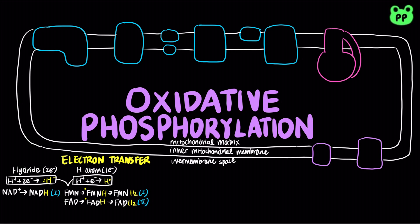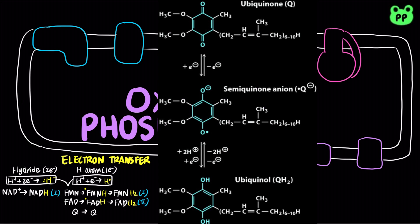Another electron carrier that can transfer either one or two electrons is a small hydrophobic compound known as ubiquinone, abbreviated as Q. Ubiquinone can accept one electron to become the semiquinone radical, or two electrons to form ubiquinol, or QH2.